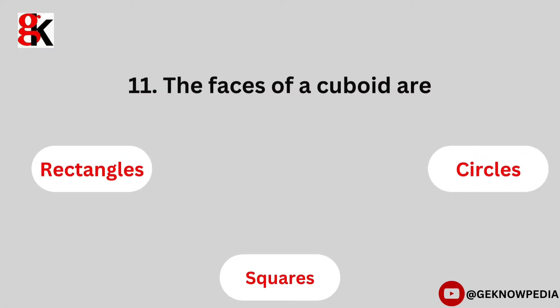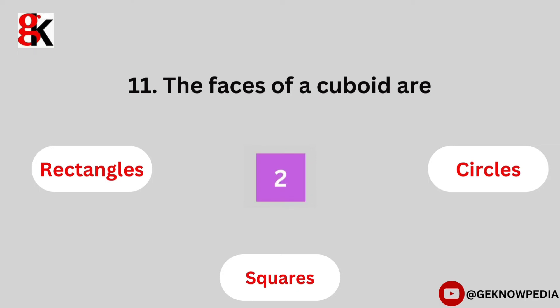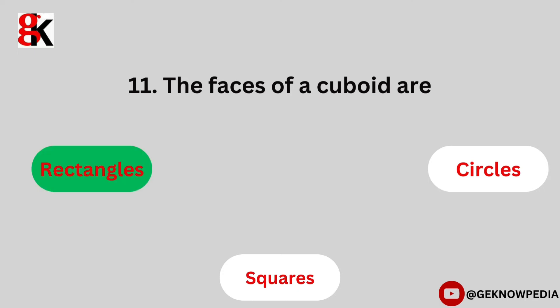Eleventh question. The faces of a cuboid are: rectangles, circles, squares. The correct answer is rectangles.